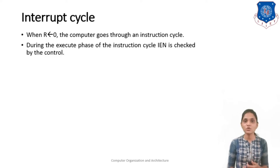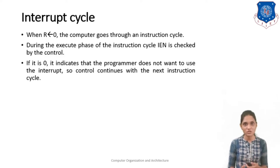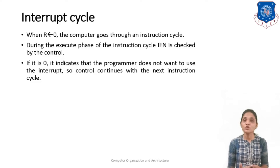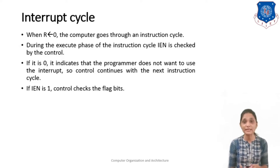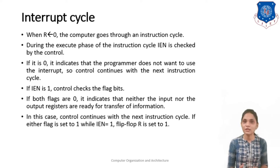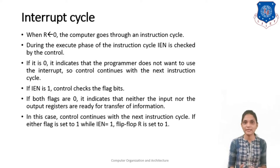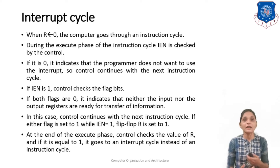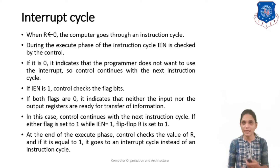During the execution phase of the instruction cycle, IEN is checked by the control. If it is 0 then it indicates that the programmer doesn't want to use this interrupt cycle, so control continues to the next instruction cycle. If IEN is 1 then the control checks for the flag bits. If the flag bits are 0, that means no input or output device is ready for transmission, and control continues to the next instruction cycle. And if either flag is set to 1 while IEN is 1, then the flip-flop R is set to 1. At the end of the execution phase the control checks the value of R, and if it is 1 then it goes to the interrupt cycle instead of the instruction cycle.